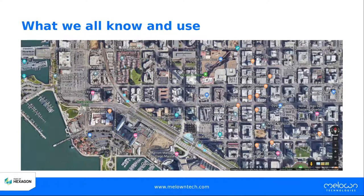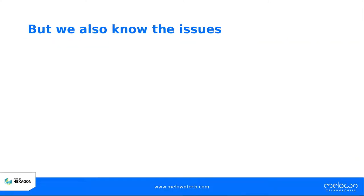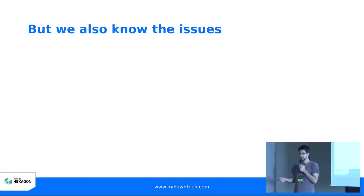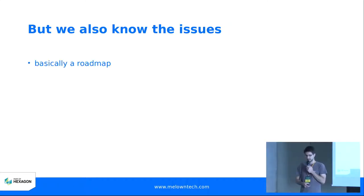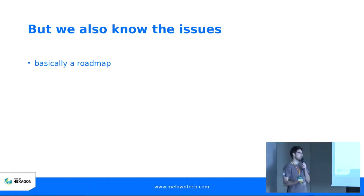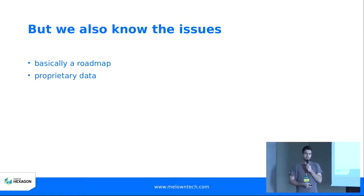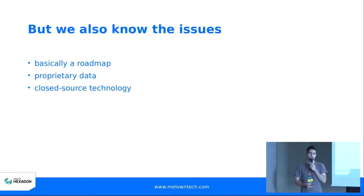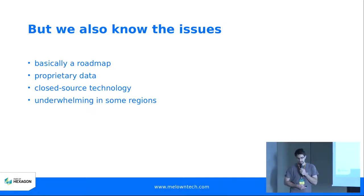When you use it, you probably also know the downsides, the limitations, the issues. Google Maps is mainly a navigation service, so the map data in there is basically a road map — not many topographic features and so on. It's proprietary data, you don't get access to them. It's based on closed source technology, so you don't even get access to the engine. And it can be a bit underwhelming in some regions.